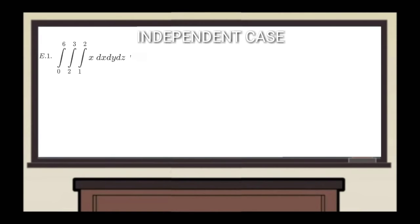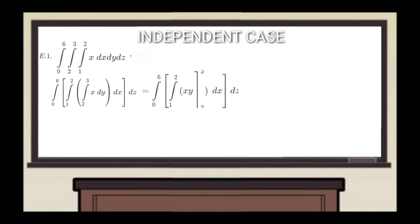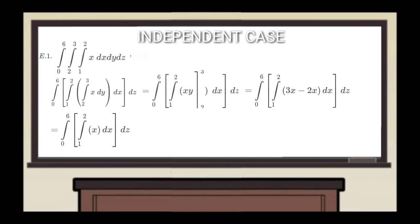We'll go ahead to the second example in independent cases: the triple integral of x as x runs from 1 to 2, y runs from 2 to 3, z runs from 0 to 6. I want to integrate the y integral first, so start with parenthesis, integrate y treating x and z as constants — it will be xy. Plug it into the outer, evaluate at y equals 3 minus y equals 2, giving 3x minus 2x which equals x. Then plug into the outer and integrate in terms of x, giving x²/2 evaluated from 1 to 2. The result is 1. Plug it into the outer, then integrate in terms of z.